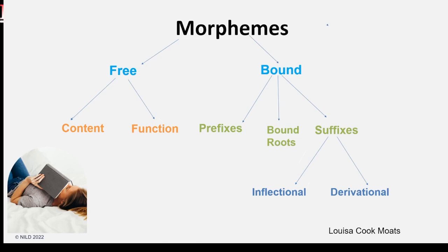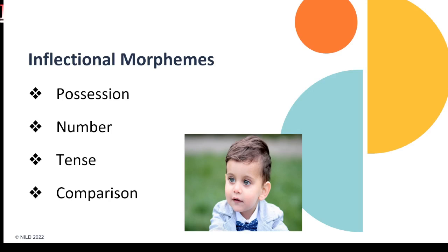Bound morphemes never stand alone. They can be prefixes, suffixes, or roots. Suffixes are classified as inflectional or derivational. Inflectional morphemes show possession, number, tense, and comparison, such as 'softer' and 'softest.' Developing children typically begin use of these near the age of two and quickly learn to add endings to words to express concepts. Use of these is normally well-developed by age eight. Children using patterns such as 'goad' or 'edid' may indicate a possible learning difficulty in language.